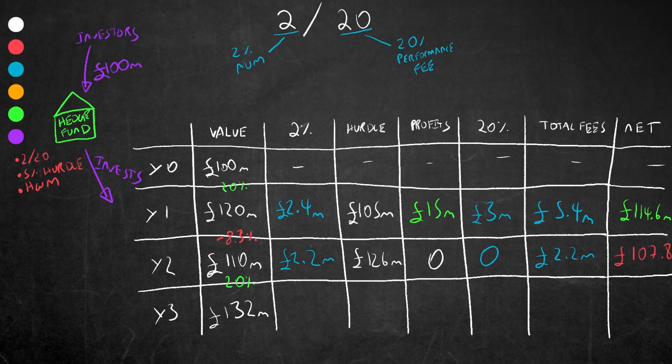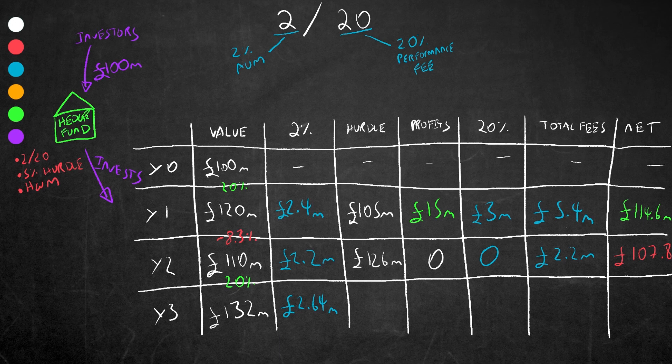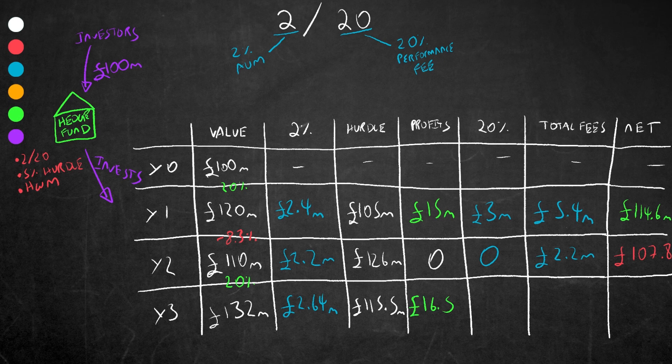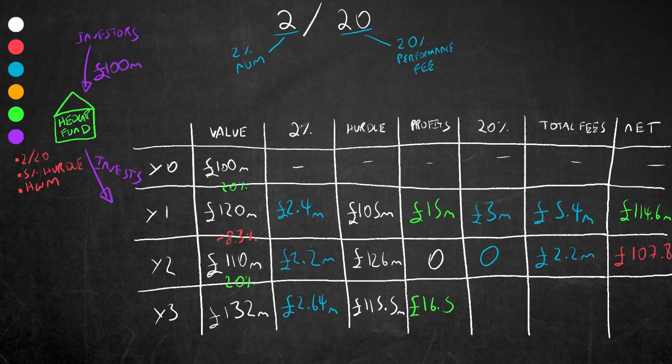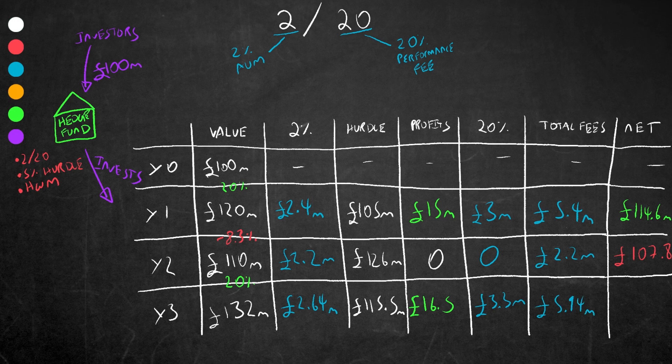In year three, the fund increases in value to 132 million pounds. The 2 percent annual fee is now 2.64 million, and the hurdle rate required is 5 percent on top of the previous value of 110 million, so 115.5 million. The profit left after the hurdle rate is 16.5 million, so the 20 percent incentive fee is 20 percent of 16.5 million, which comes to 3.3 million. In total, the fund collects fees of 3.3 million plus 2.64 million, which is 5.94 million, leaving the net value at 126.06 million pounds.